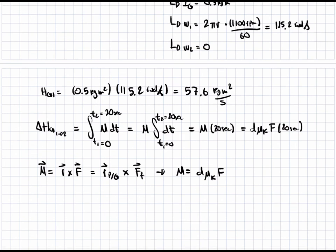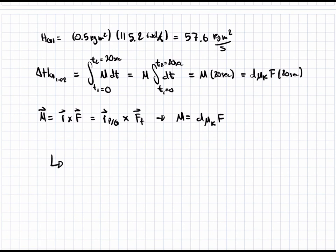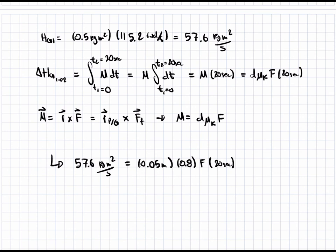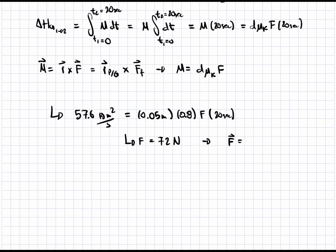Putting everything together: 57.6 kilograms meters squared per second equals 0.05 meters times 0.8 times F times 20 seconds. Solving, F equals 72 newtons. In vector form, F equals 72 newtons in the negative k-hat direction. This is our final answer.